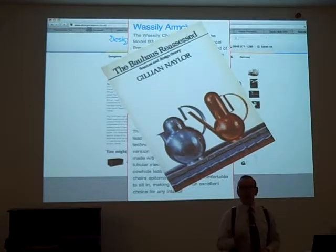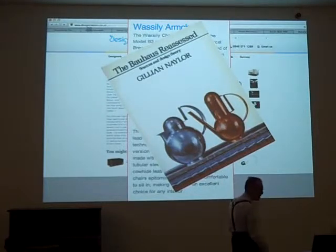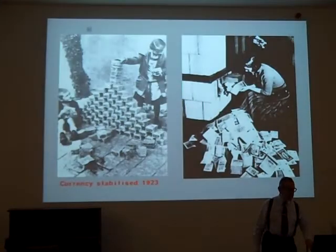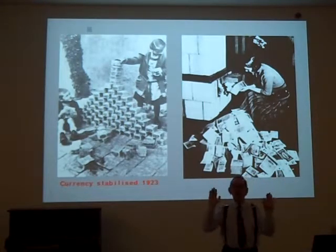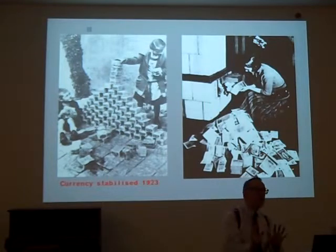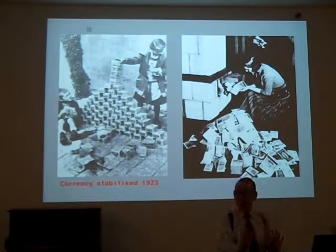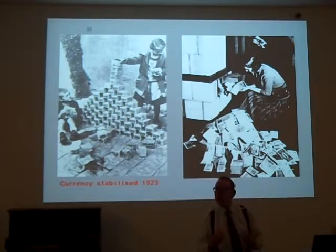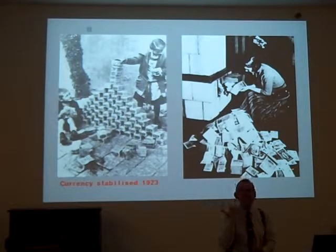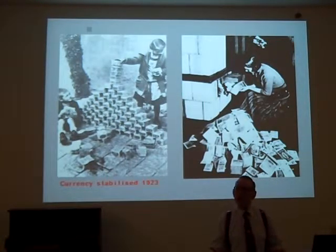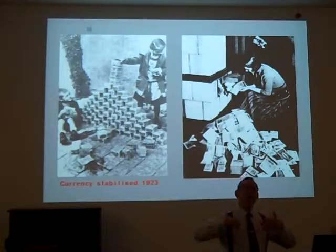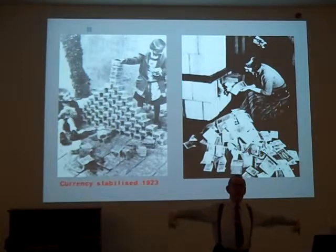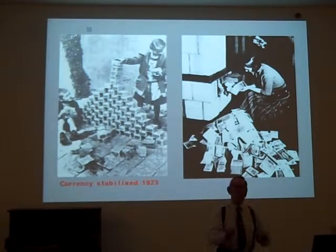Gillian Naylor, who died just recently, wrote a splendid book called The Bauhaus Reassessed. She was something of an expert on the Bauhaus and puts this design into its wider context. We're looking at a 1925-26 chair with a steel frame. The point I'm making is that fully to understand why the chair is the way it is, you need to understand the wider context. I'm looking at a historical example; you're concerned with objects emerging now — you're in the process of launching objects into the world. The wider context feeds into how you think, feel, and what you do.